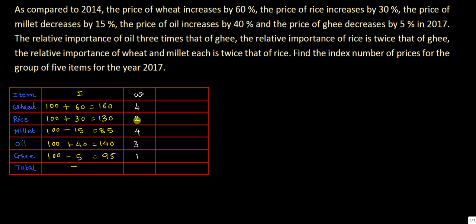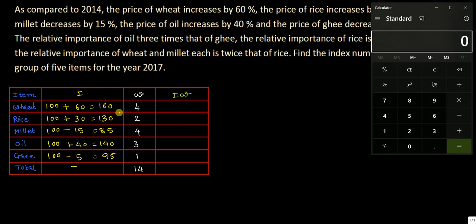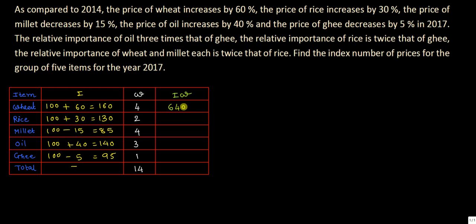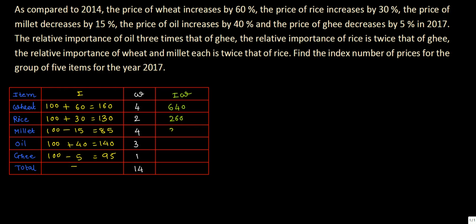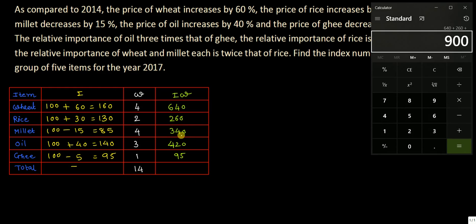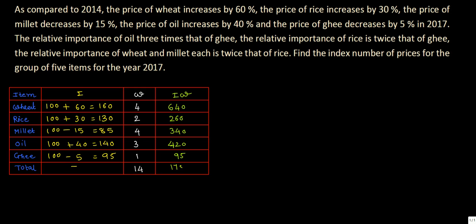Now find the IW column. Wheat: 160 into 4 equals 640. Rice: 130 into 2 equals 260. Millet: 85 into 4 equals 340. Oil: 140 into 3 equals 420. Ghee: 95 into 1 equals 95. Sigma IW equals 640 plus 260 plus 340 plus 420 plus 95, which is 1755.